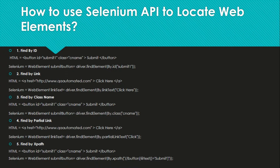Next is partial link text. If the link text is a long paragraph or big text, we don't have to write the complete text — we can write just the partial text. So instead of 'Click Here', we can write just 'Click' and it will still work fine.